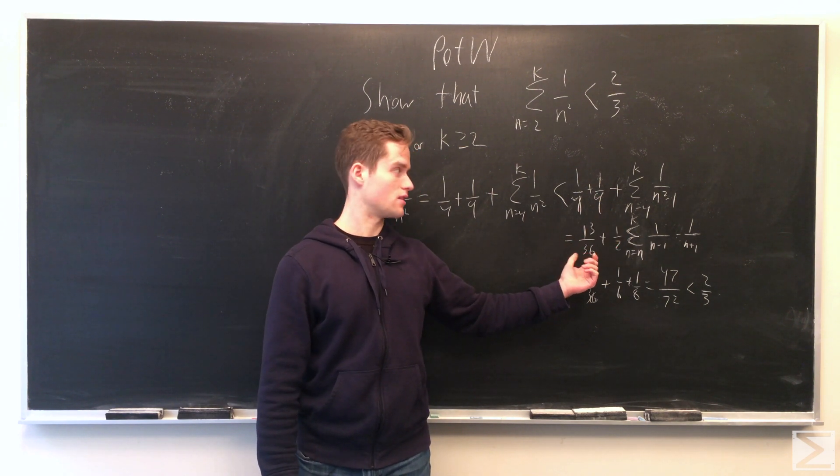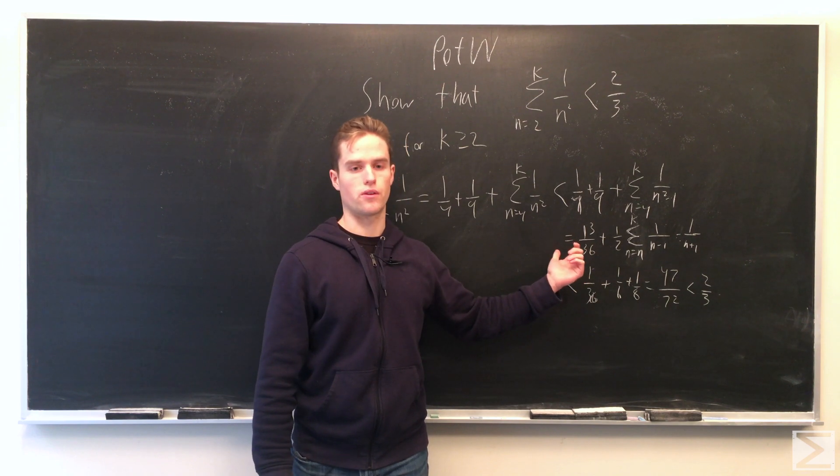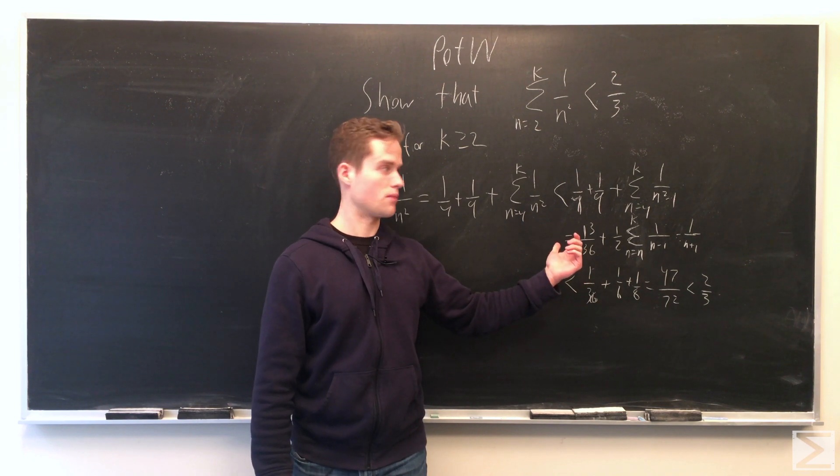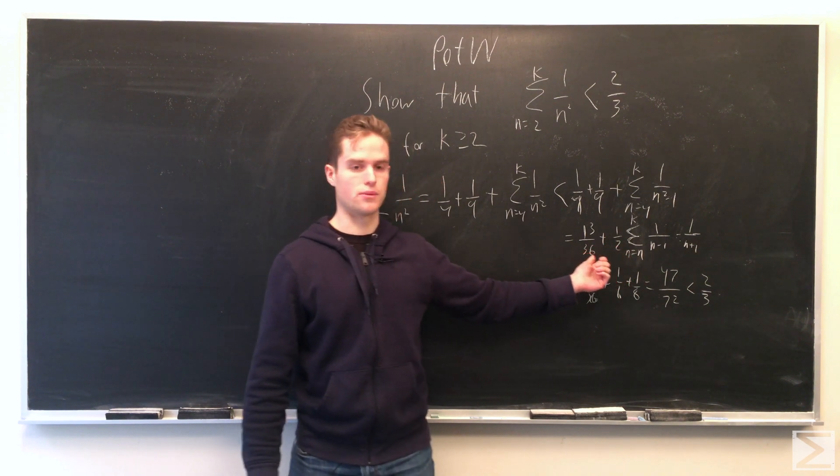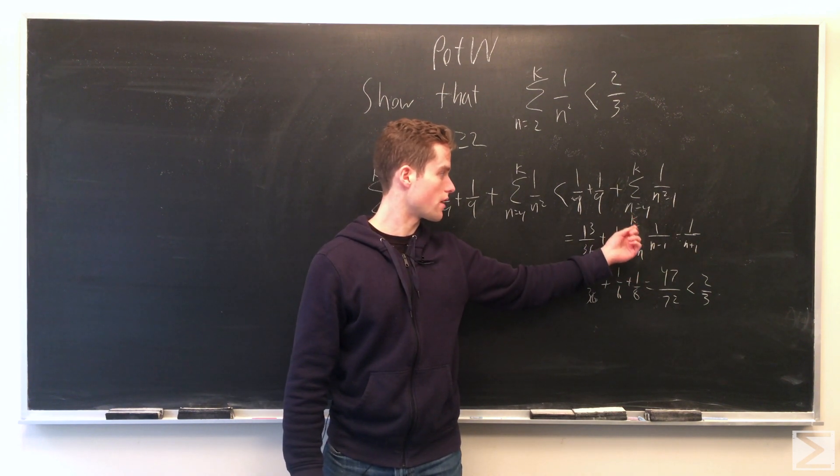1 over n squared minus 1 has a nice form. It's equal to 1/2 times (1 over n minus 1 minus 1 over n plus 1). We can pull out the 1/2, and our sum becomes sum from n equals 4 to k.